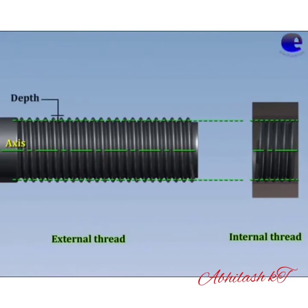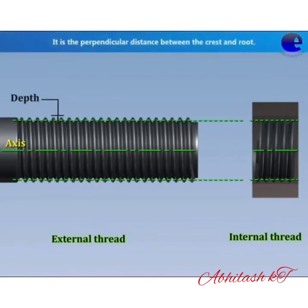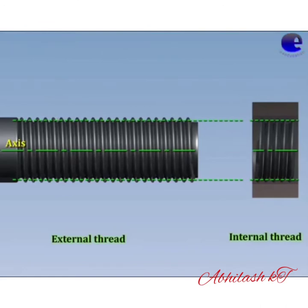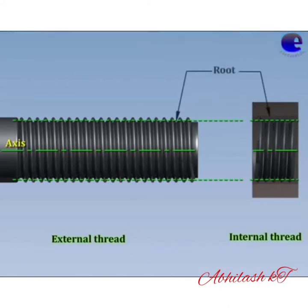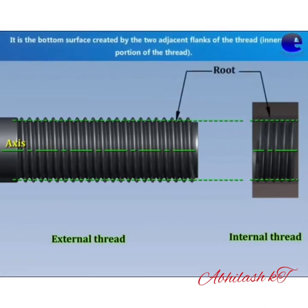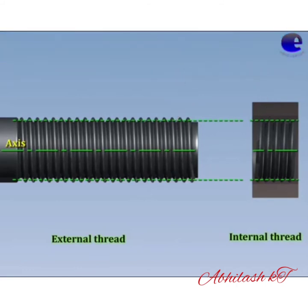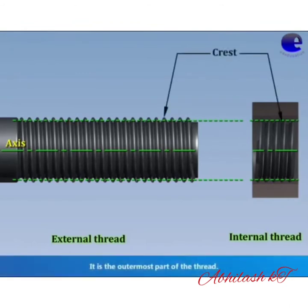Next is depth. It is the perpendicular distance between the crest and root of a thread, denoted by letter H. Next is flank — it is the surface of the thread between the crest and root of the thread. Next is root — it is the innermost portion of an external thread and the outermost portion of an internal thread. It is the portion of the surface of the thread connecting the adjacent flanks.